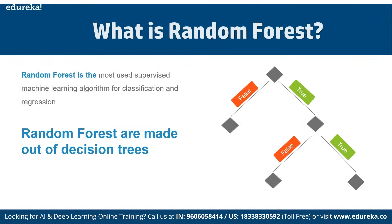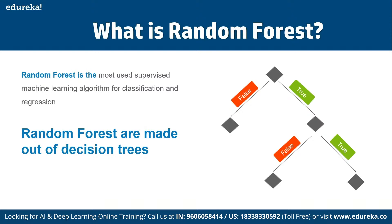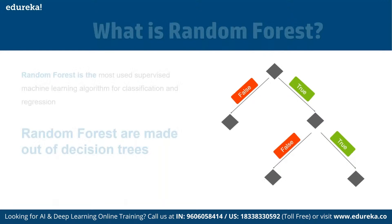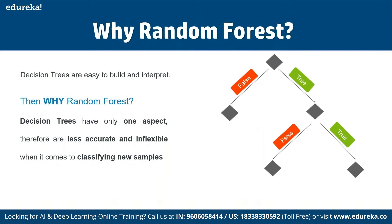Random forest is a supervised classification and regression algorithm. As the name suggests, this algorithm randomly creates a forest with several trees. Generally, the more trees in the forest, the more robust it is. Similarly, in random forest, the higher the number of trees, the greater the accuracy. In simple terms, random forest builds multiple decision trees — called a forest — and combines them to get a more accurate and stable prediction.